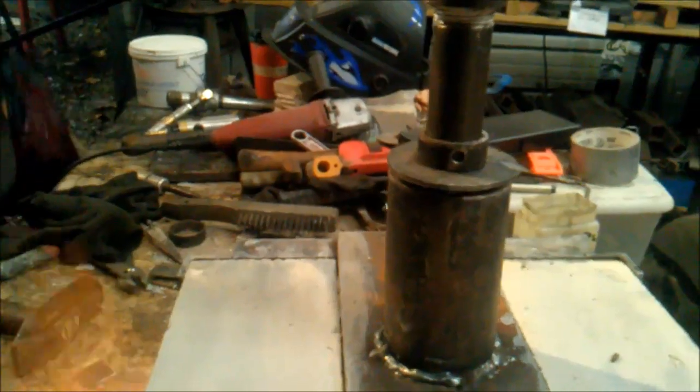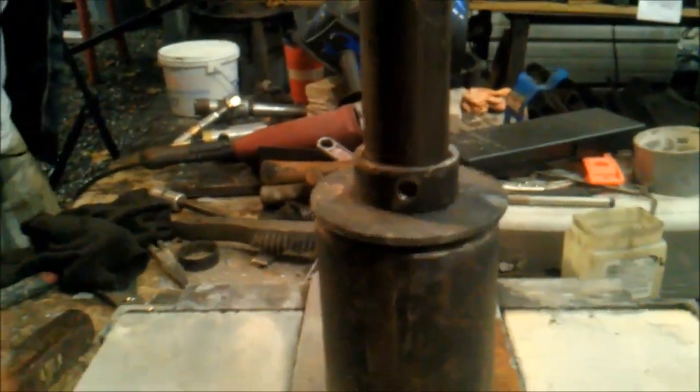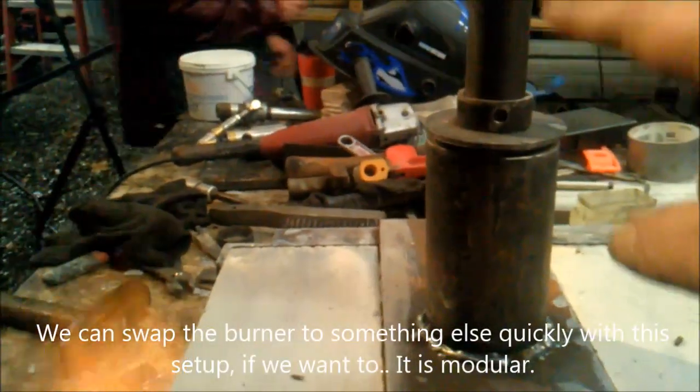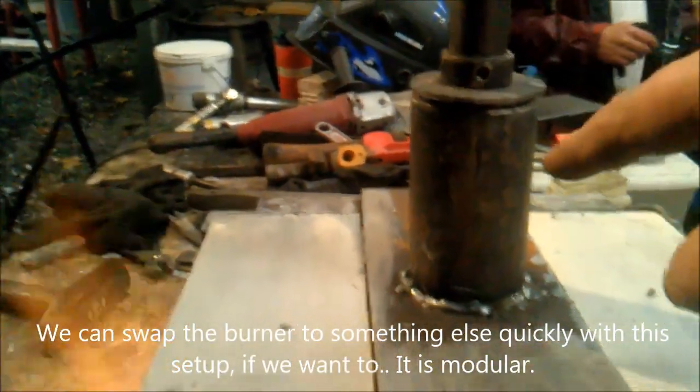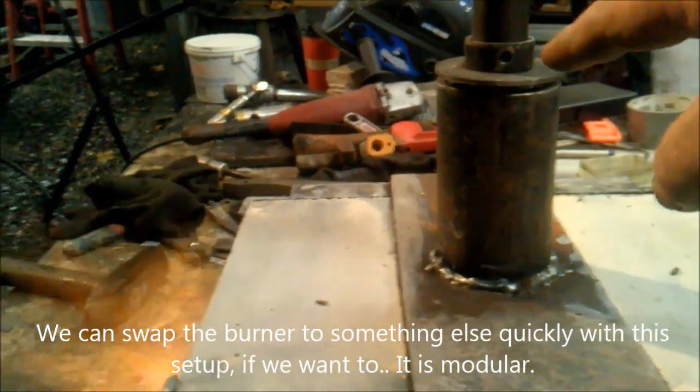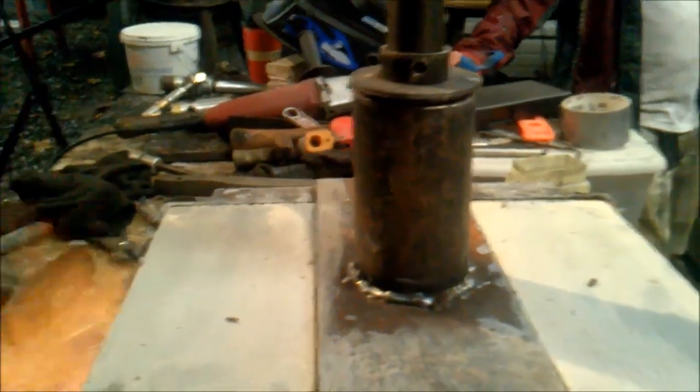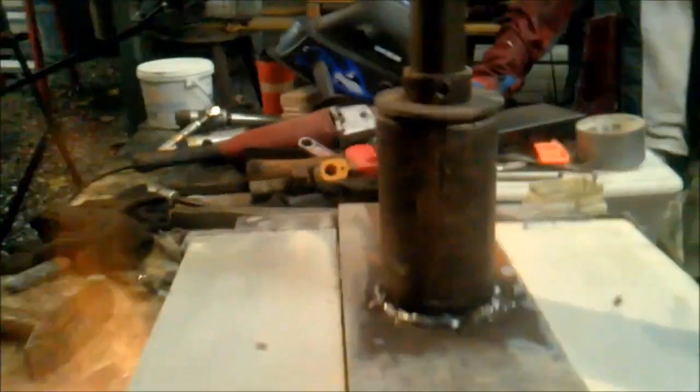We can pull that burner out and stick it in something else we want to. We've got a little collar right there, just letting that pipe slide up and down that collar. And that's a little, that's a little over 2 inch pipe, and that's holding a little piece of 2 inch tubing inside there.